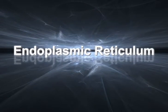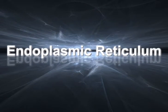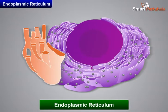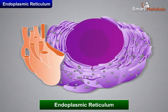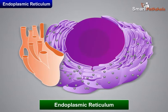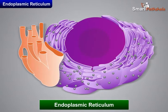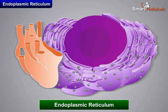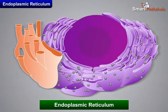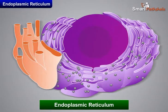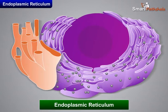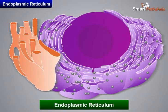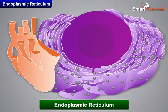The endoplasmic reticulum, or ER, is a large network of membrane-bound tubes and sheets. It looks like long tubules or round vesicles. The ER membrane is similar in structure to the plasma membrane.